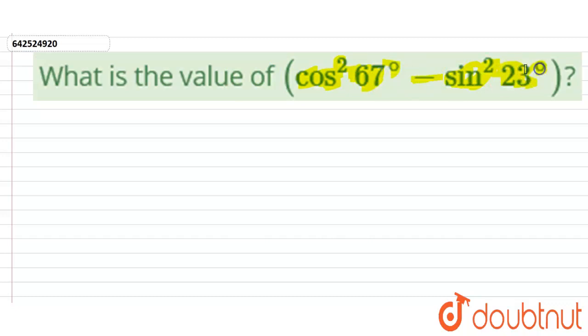To find the value of this expression, the prerequisite knowledge is that cos(90° - θ) equals sin(θ). That's the identity we need to use.